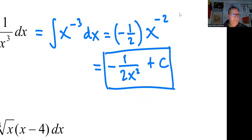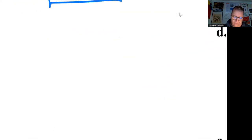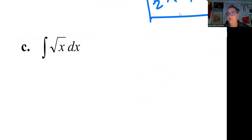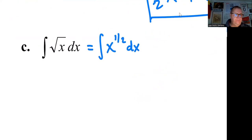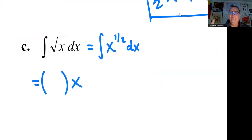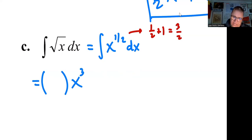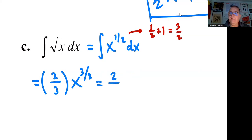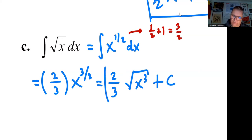For problem C, the integral of √x dx: rewrite √x as x^(1/2). The new power is 1/2 + 1 = 3/2, and the reciprocal is 2/3. So we get (2/3) · x^(3/2) + C. We can go back to radical notation: (2/3)√(x³) + C. Don't forget the plus C at the end.